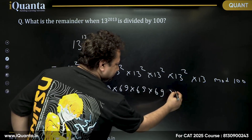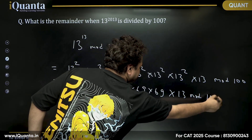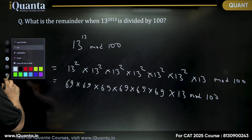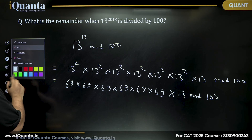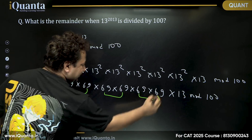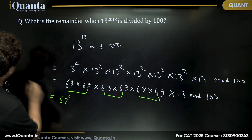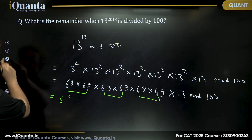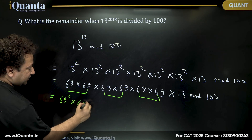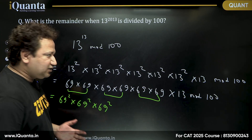Now, 13² = 169, and we need only the last two digits, so instead of 169 we take 69. We have six instances of 69, so we can group them: 69² × 69² × 69², then multiplied by 13, all mod 100. Dividing 69 by 100 gives remainder 69, so we keep 69.